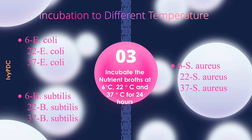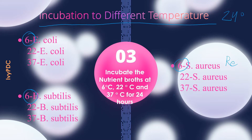After inoculation is the incubation of these nutrient broths at different temperatures for 24 hours. Test tubes labeled as 6°C will be incubated inside the refrigerator, those labeled as 22°C will be incubated at room temperature, and those labeled as 37°C will be placed inside the incubator.